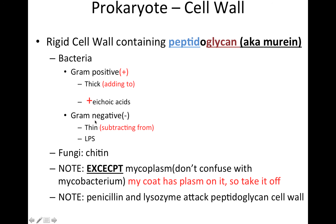Moving on to gram negative — we're going to let the negative tell us something about the cell wall as well. To contrast with gram positive, gram negative cell walls are thin. We use that minus sign as a subtraction sign, thinking we're subtracting from it and it's getting thinner. The most important part of the gram negative cell wall is LPS — lipopolysaccharide. And for fungi, the cell wall contains something called chitin.